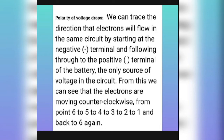Hello friends, today our topic is the polarity of voltage drops. We can trace the direction that electrons will flow in a circuit by starting at the negative terminal and following to the positive terminal of a battery, the only source of voltage in the circuit. We can see that the electrons are moving counterclockwise from point six to five to four to three to two to one and back to six again.